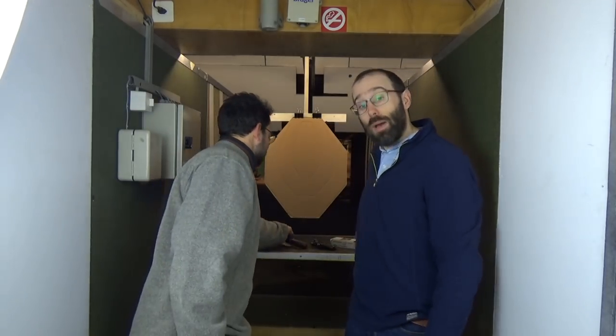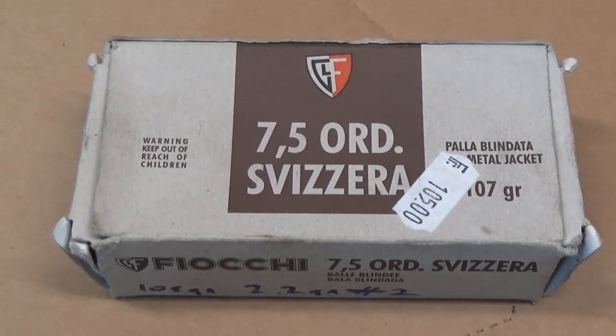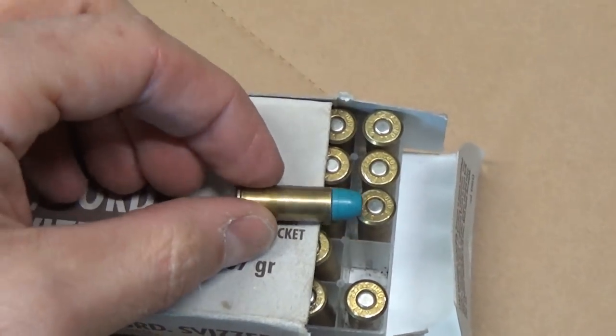Now, as for ammunition, one thing we like to bang on about on bloke on the range is that you can shoot .32 Smith & Wesson long in these. Not good if you want to reload them, because they tend to blow out a bit. But what I have here is not a box of Fiocci 7.5. It was a box of Fiocci 7.5, and it did cost 105 francs, so over $100 for 50 shots. However, a friend who had acquired this, he doesn't reload, and he gave me the cases.